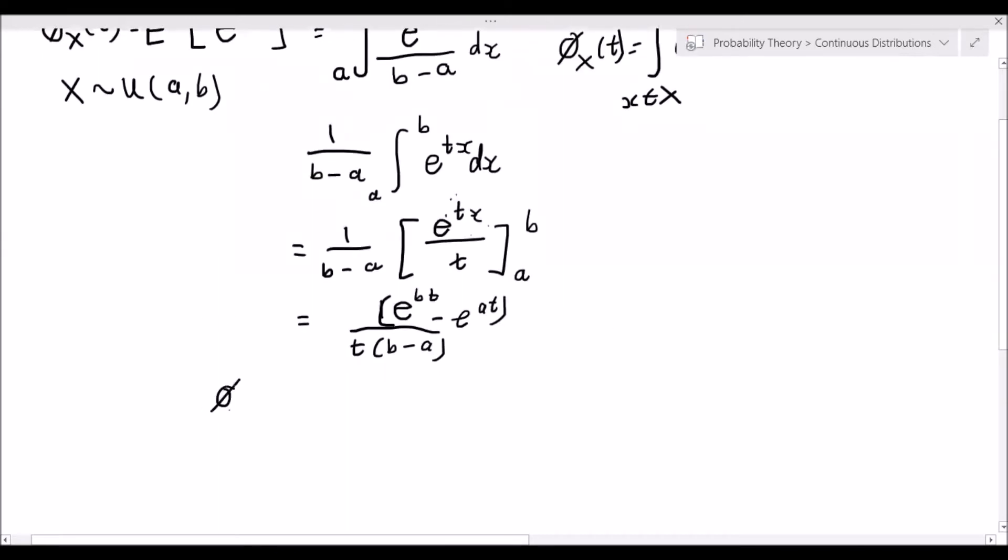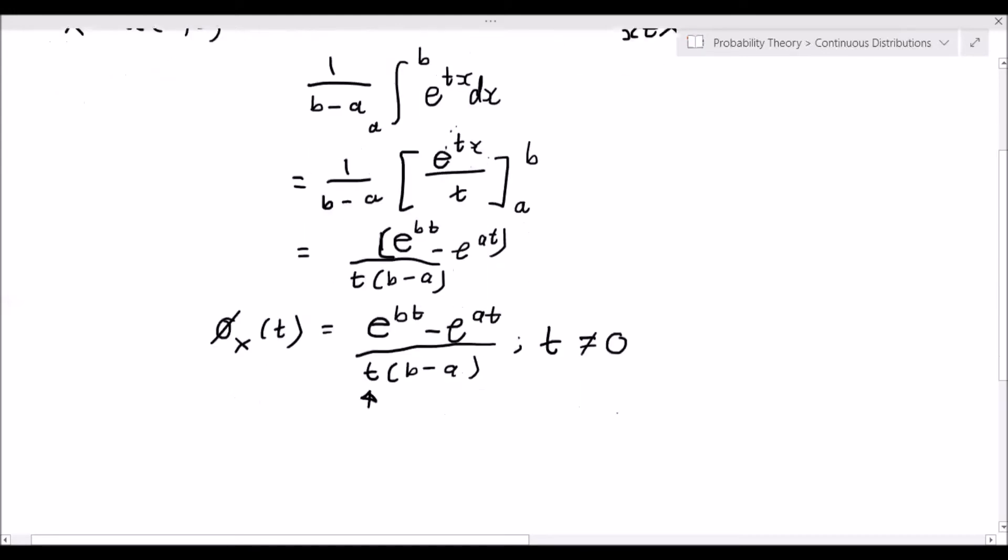So what we ended up deriving is phi x of t, the moment generating function of x, which is e to the bt minus e to the at over t times b minus a. Now we need to ensure this fraction is valid. Clearly we can see that the constraint on t for this equation to hold is that t cannot equal zero. We can't have zero in our denominator, so we have to ensure that t does not equal zero.